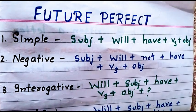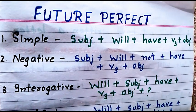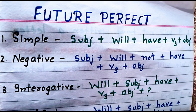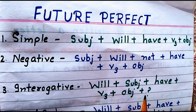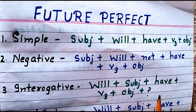The third type is interrogative, where we ask questions in future perfect tense. The structure is: Will + subject + have + third form of verb + object + question mark. Because it is an interrogative sentence, we put a question mark at the end.